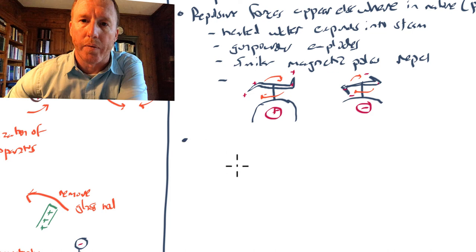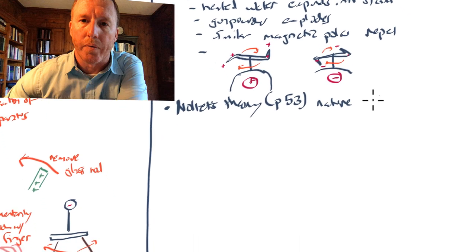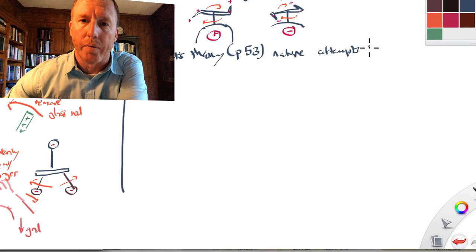And remember that Nollet's theory that Franklin is criticizing here: Nollet's theory was that quantities of different densities mutually attract each other in order to restore equilibrium. And Benjamin Franklin says this theory is not really well-founded. Although it is true that if you distort this electrical fire, it does attempt to re-establish equilibrium, it doesn't fully explain the phenomena.